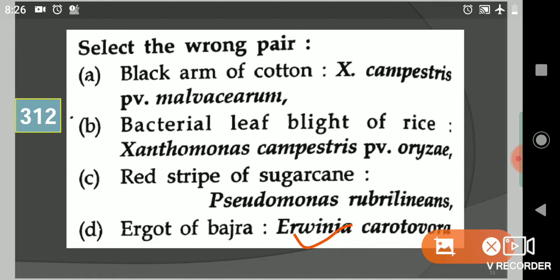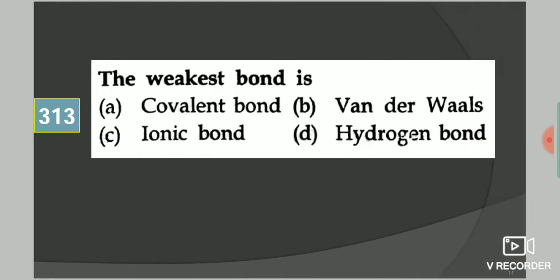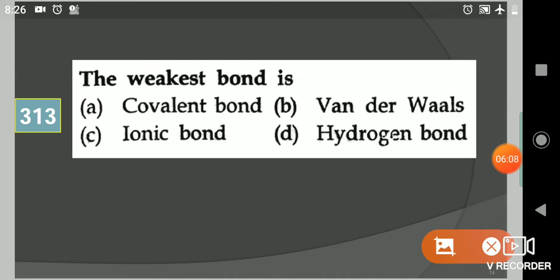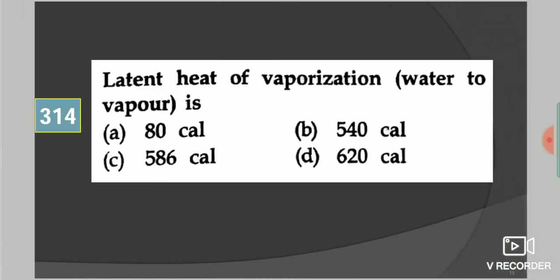Come to the next question: The weakest bond is? Your options are covalent bond, Van der Waals, ionic bond, hydrogen bond. Your answer is Van der Waals.